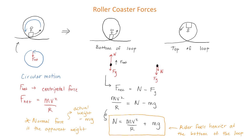The normal force is the result of the surface pushing against the object. Since the surface is above the object, it has to push down in order to push back against the object, so the normal force is pointed down. The net force is also pointed down because it's directed towards the center of the circle.